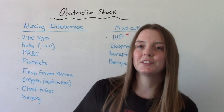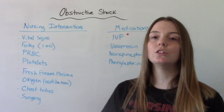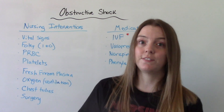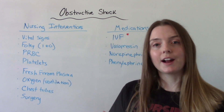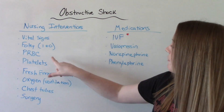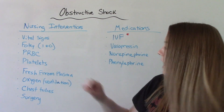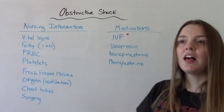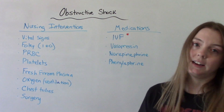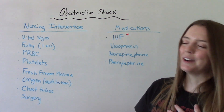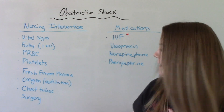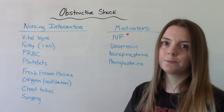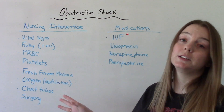Our nursing interventions for these patients include watching those vitals — looking for hypotension, tachycardia, tachypnea — and monitoring their O2. Of course, we're going to put in a Foley so we can get a more accurate I and O. We might want to give a blood transfusion — packed red blood cells, platelets, even plasma. They're definitely going to need oxygen, and they might even be placed on a ventilator — we'll monitor afterwards. They might need chest tubes and even surgery, so we would help prep for surgery and then care for them postoperatively.